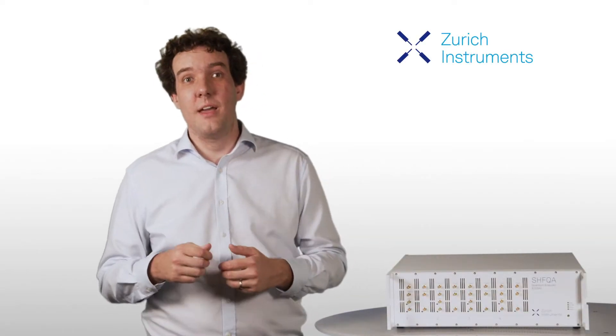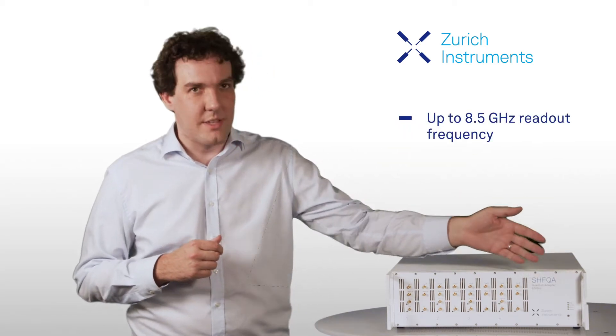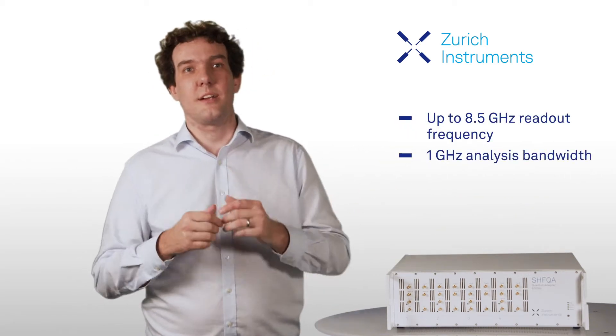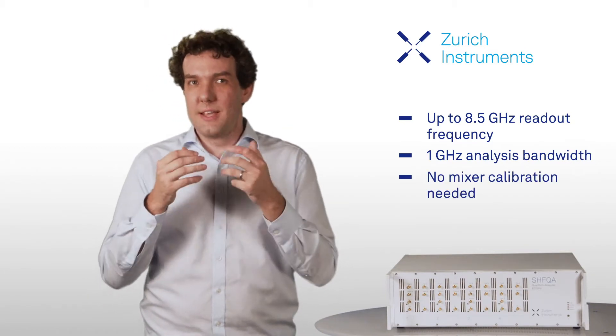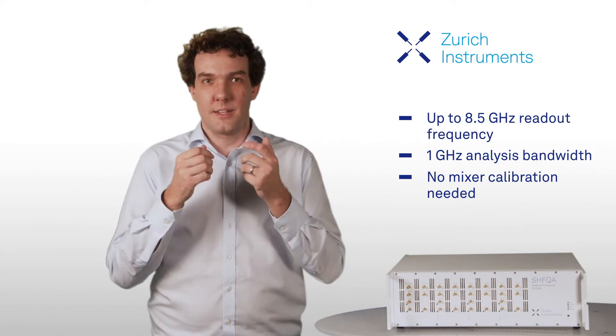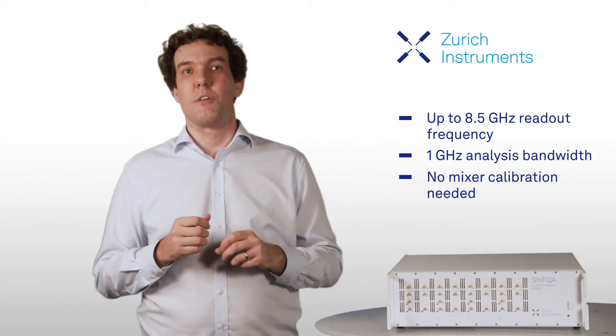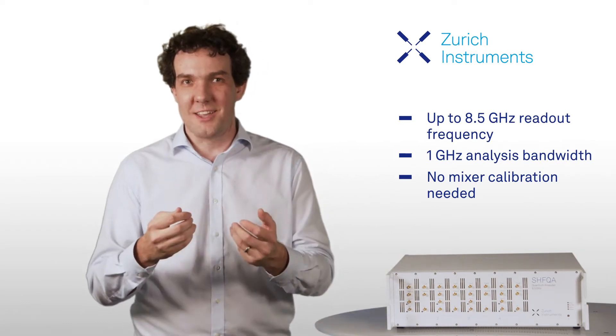The SHFQA can both generate and analyze a readout signal at up to 8.5 GHz. It offers 1 GHz of spurious-free analysis bandwidth without the need for regular calibration, thanks to its double superheterodyne frequency conversion, which ensures that the signal is clean and stable right from instrument startup. Contrast this to a setup using IQ mixers.